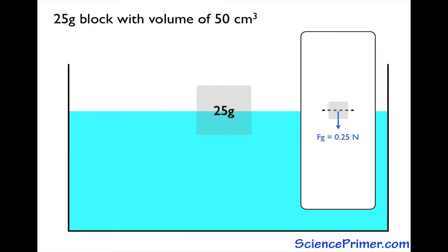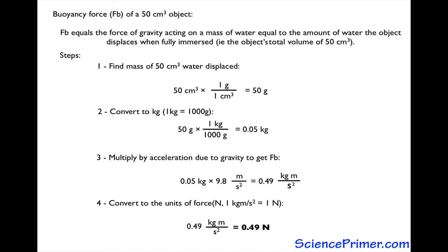The opposing force, the buoyancy force, pushes up on the object. This force is equal to the acceleration due to gravity acting on a mass of water equal to the amount of water the object displaces. In this example, the volume of water equals the 50 cubic centimeter volume of the object.